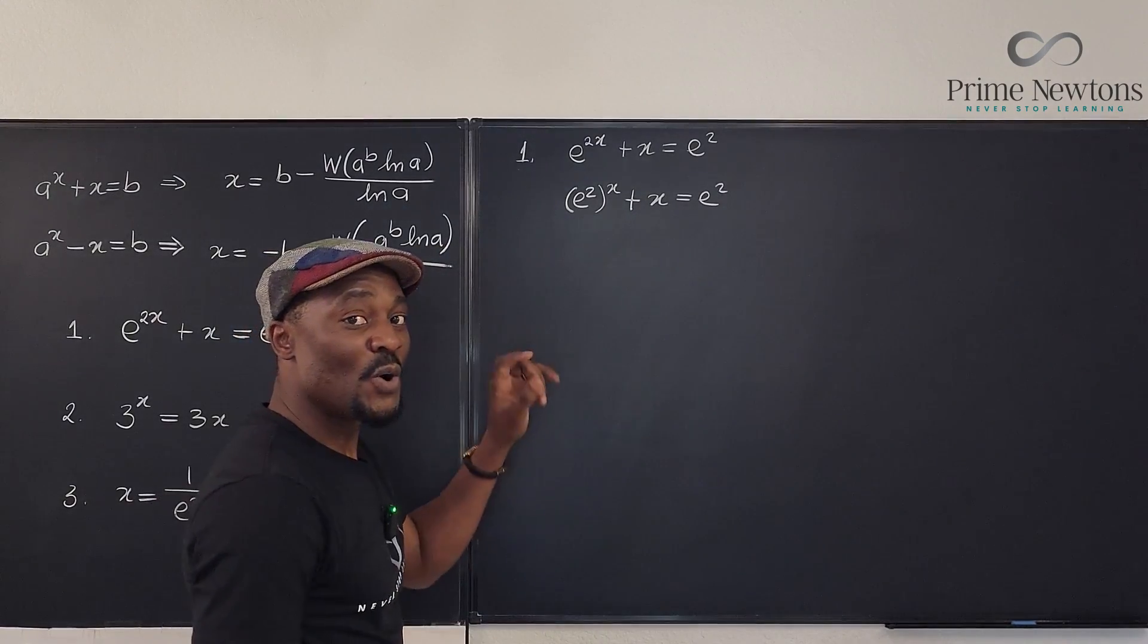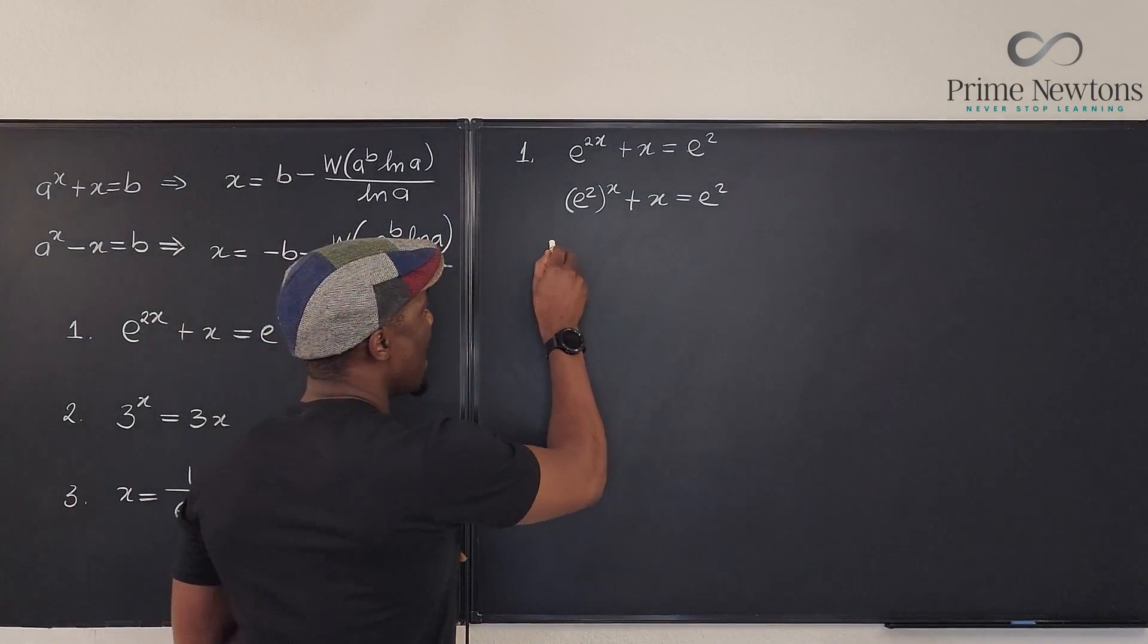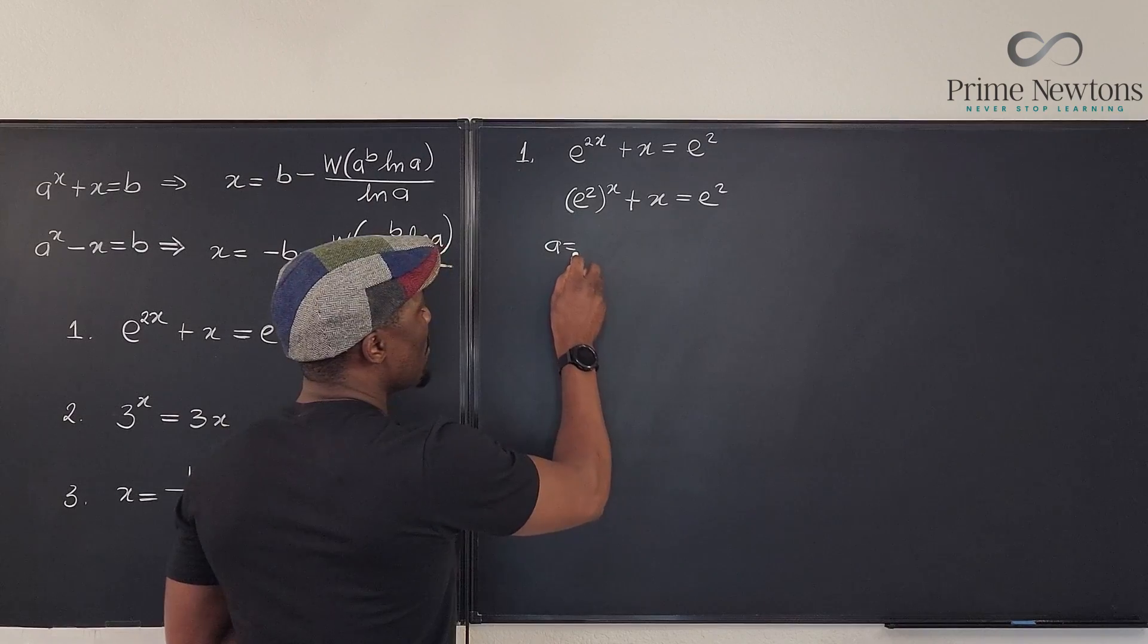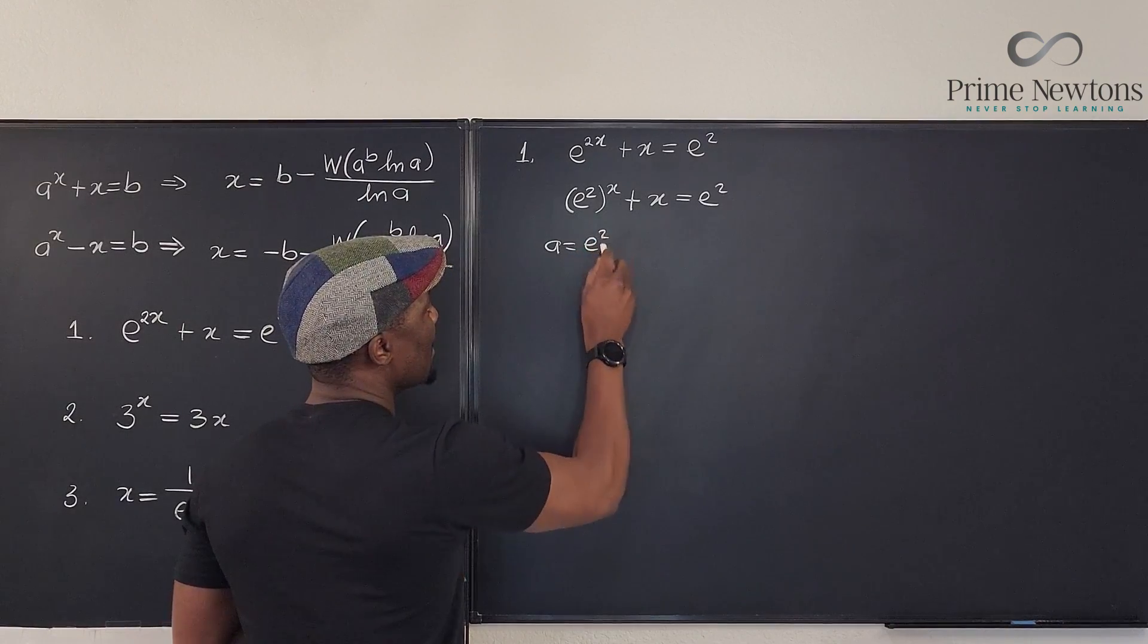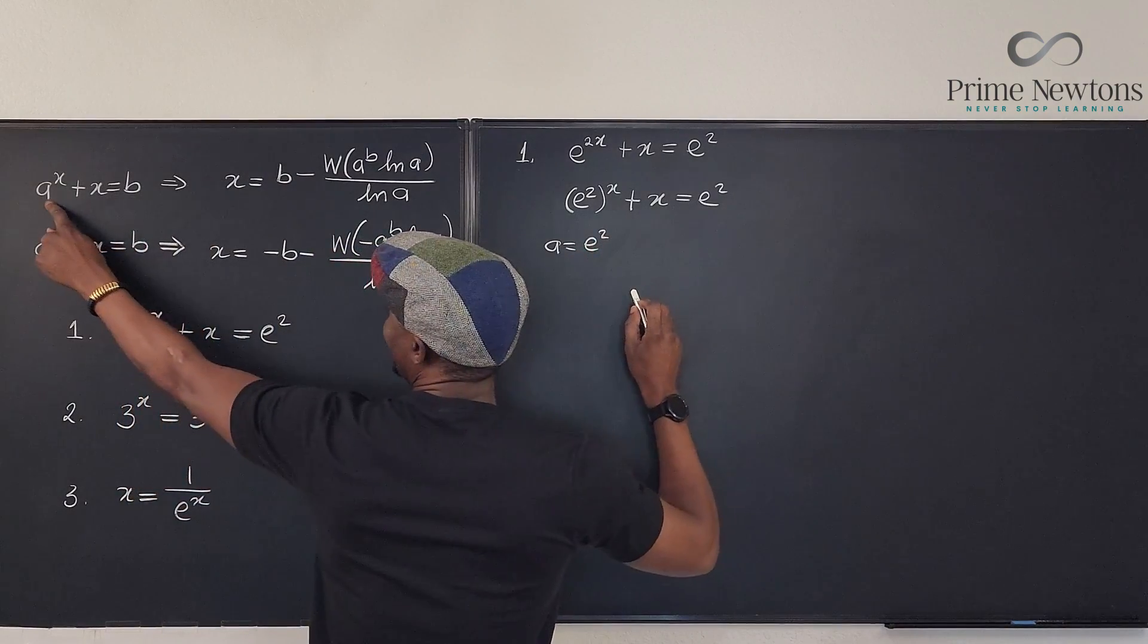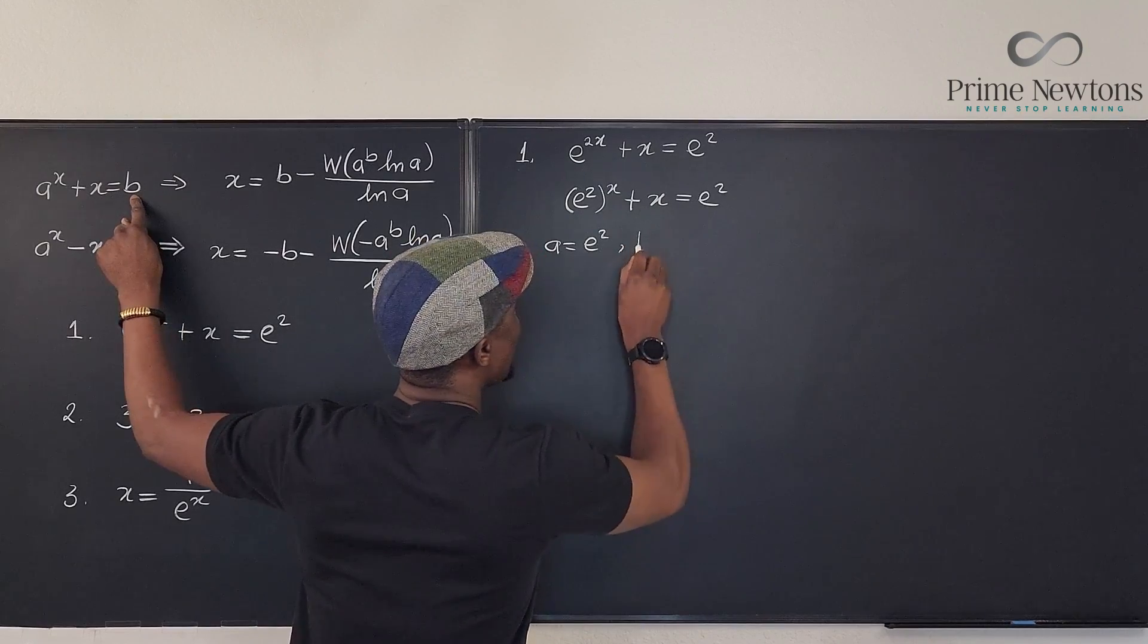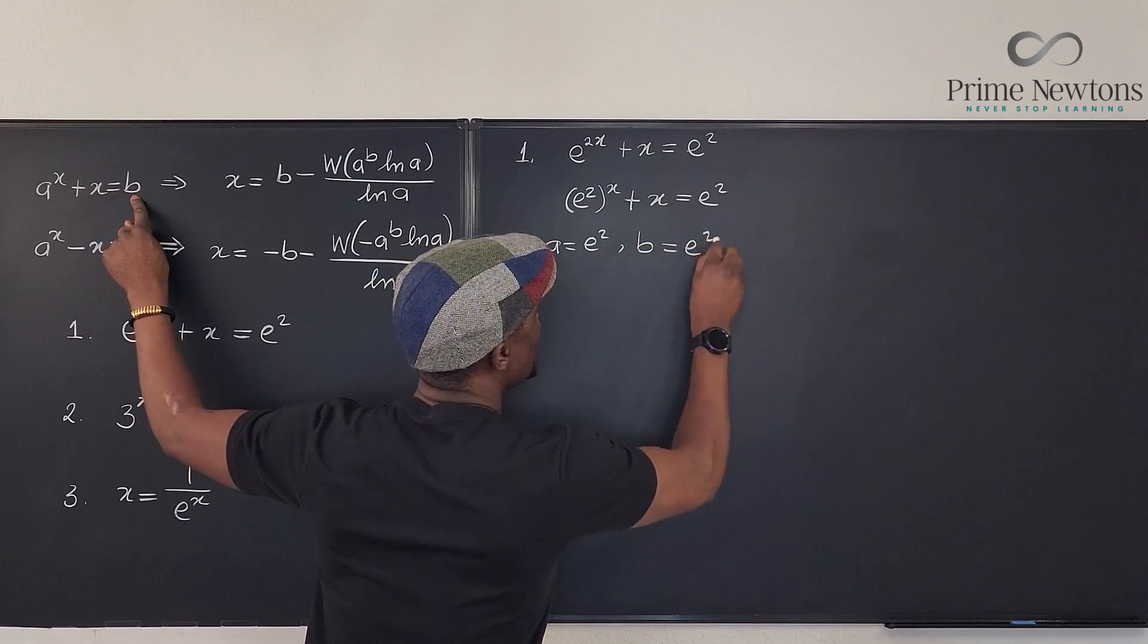So, from here, we know what our a is. We know a is equal to e squared. Right there. And we know what our b is. b equals e squared also.